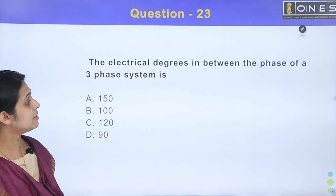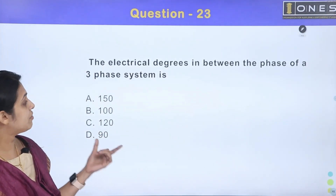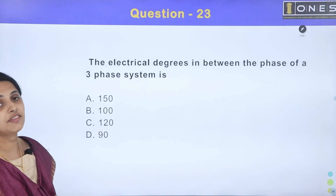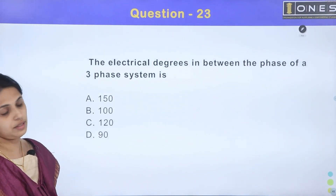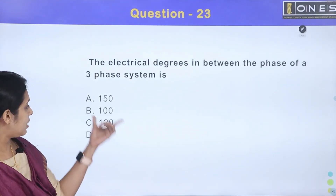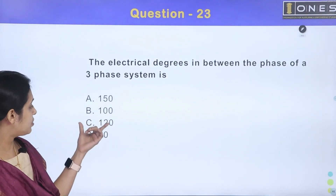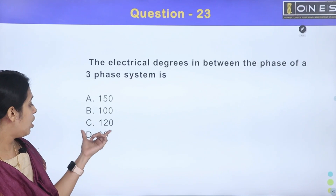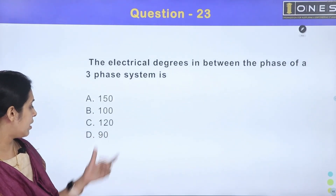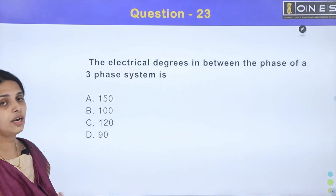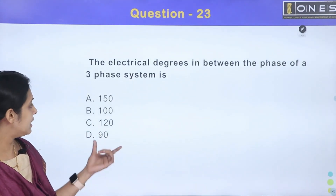Next question. The electrical degrees between the phases of a three-phase system. Options are: Option A: 150, Option B: 100, Option C: 120, and Option D: 90.